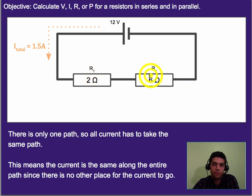So that means this resistor will get 1.5 amps and this resistor will also get 1.5 amps because there's no other path for it to take.